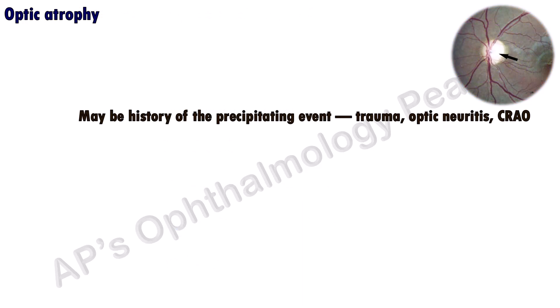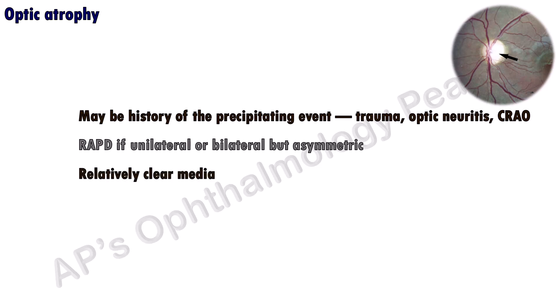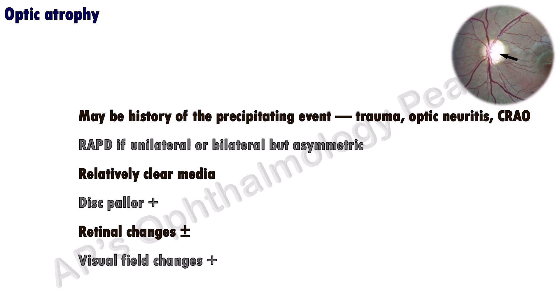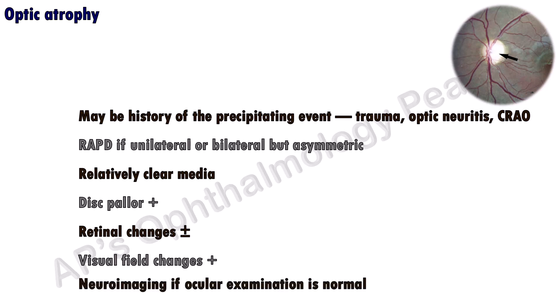Optic atrophy occurs secondary to another pathology, so there may be a history suggestive of it — such as trauma, a sudden diminution of vision causing optic neuritis, central retinal artery occlusion, or anterior ischemic optic neuropathy. If the optic atrophy is unilateral or bilateral but asymmetric, a relative afferent pupillary defect will be present. The media is clear, the disc is characteristically pale, and perimetry will help detect visual field changes. If disc pallor is present without any other obvious cause, neuroimaging to detect intracranial compression of the optic nerves is warranted.